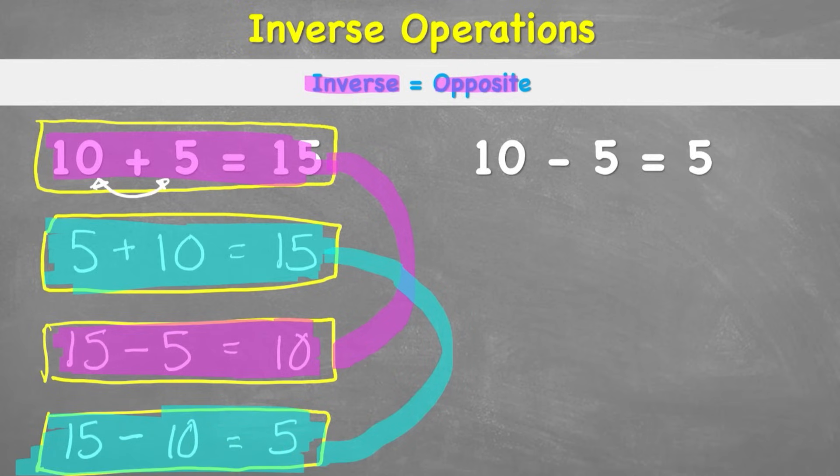But how could this help you? Let's have a look at this question here. Let's imagine that we don't know this number here, this 10. Let's say our question now says something minus 5 equals 5. You must have seen a question like this before. It's called a missing number problem, where we have the missing number before the equals sign. So how can we use inverse to help us here?